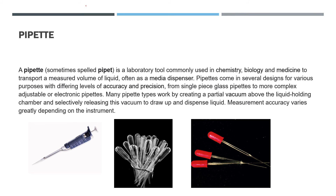A pipette is a laboratory tool commonly used in chemistry and biology. It is used to transport a measured volume of liquid — you take one ml of liquid, press the button, and it comes out. There is also the upper meniscus for colored solutions and the lower meniscus for colorless solutions. That is why a circle is drawn to indicate the correct reading level.